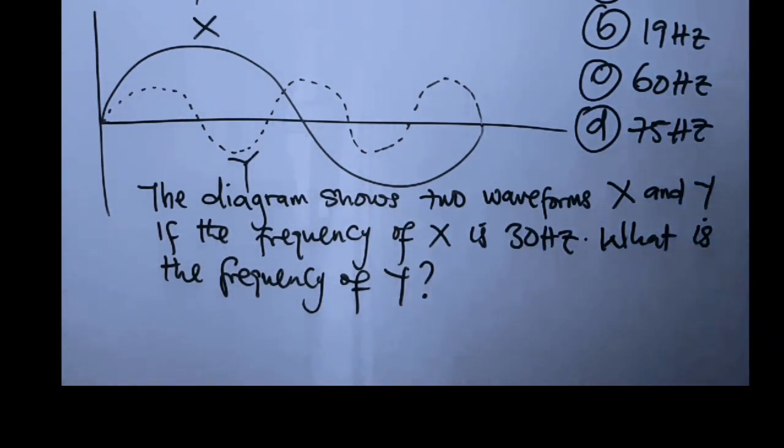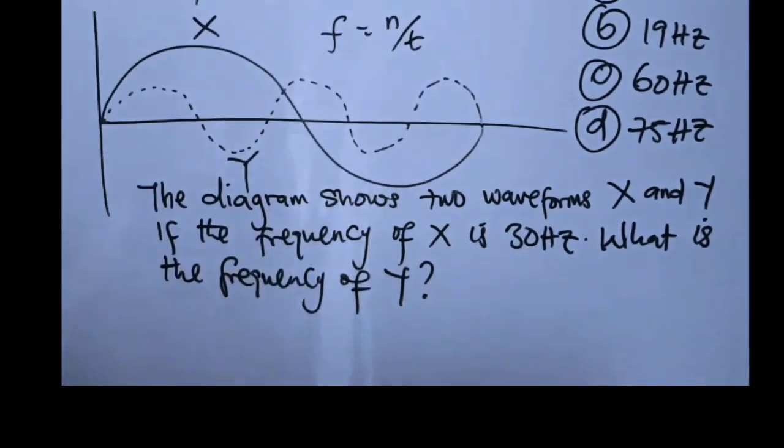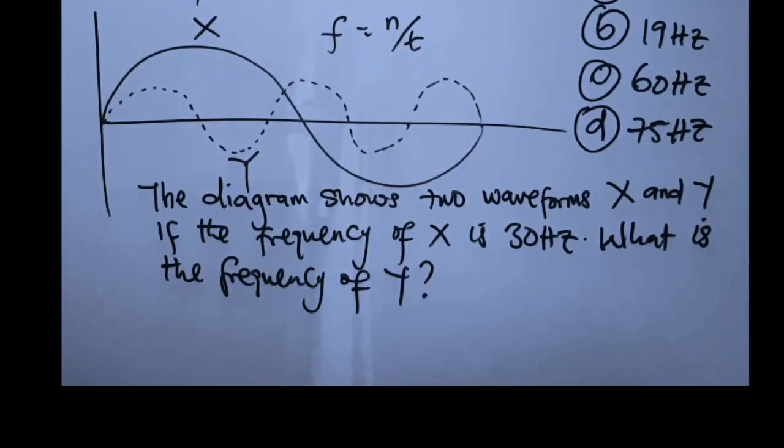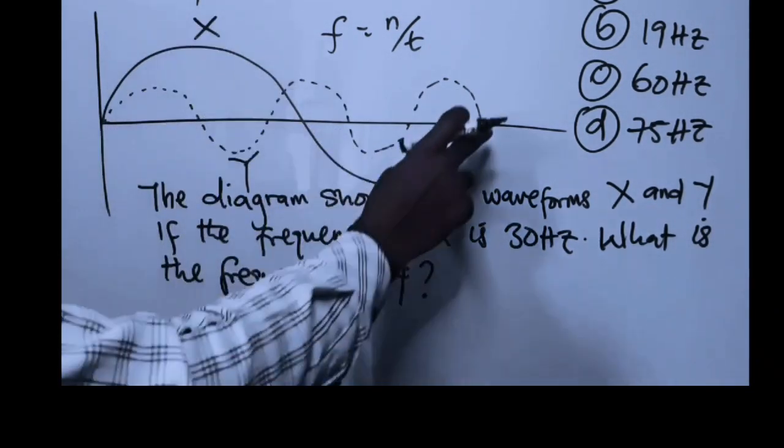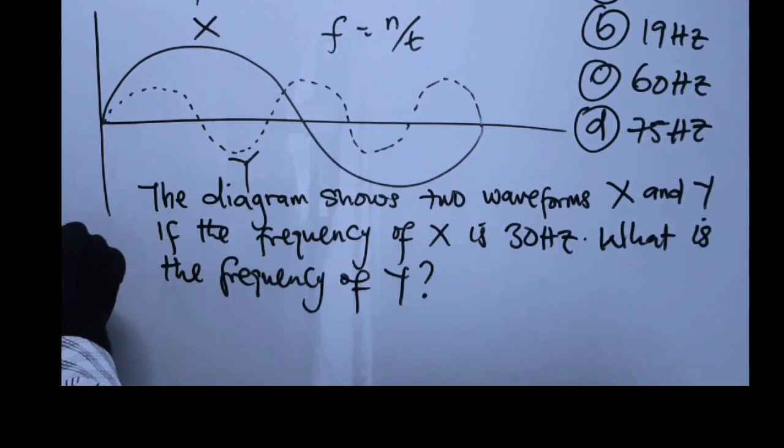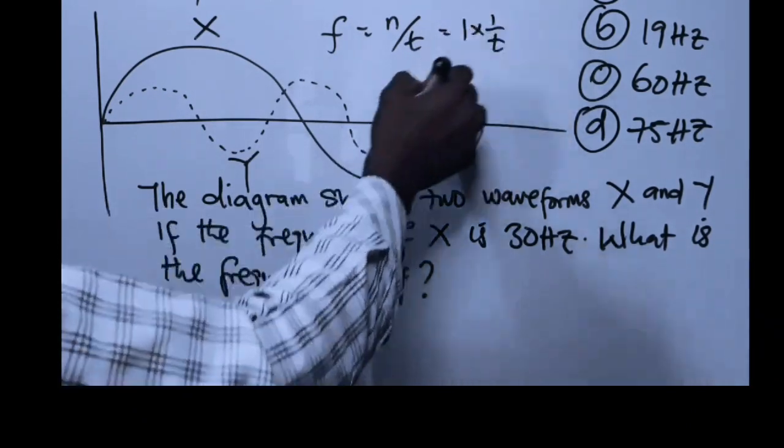To do that is very simple. We know that frequency f is always equal to the number of cycles per second. So if that is true, let's consider the first cycle. This is only one cycle for x.